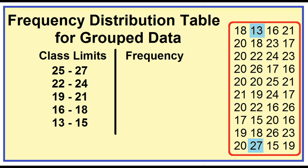A frequency is the number of times a data value occurs. Let's count the number of times 13, 14, and 15 occur in our data. 13, 15, 15, 15 — the frequency for the class 13 to 15 is 3.